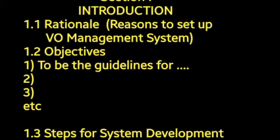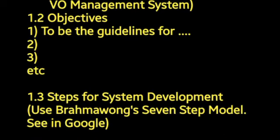Then 1.2 will be Objectives. Usually we itemize them: for example, number 1 — to be the guidelines for administration and management of your organization — and you may add number 2, 3, 4, or even 5. Then 1.3 is steps for system development; I recommend you use Brahma Wong's seven steps, which you can find on Google. The last one is 1.4, benefits of the system — what good will it be and what it will help you with.